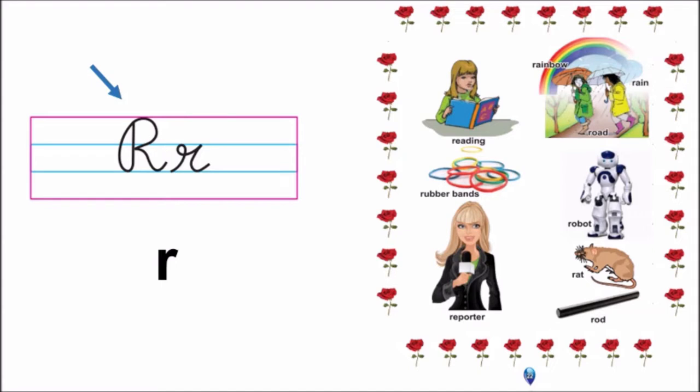This arrow is pointing at capital cursive R, and this is lowercase R in cursive, and this is print R. And what is the sound of letter R? R. Say again with me: R, R. Good.